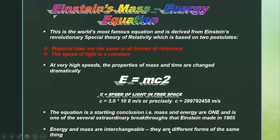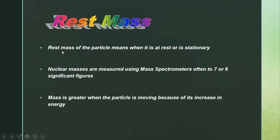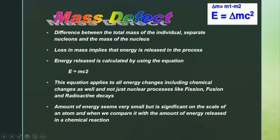Energy and mass are interchangeable — they are different forms of the same thing. Rest mass of a particle means its mass when it is at rest or stationary. Nuclear masses are measured using mass spectrometers, often to seven or eight significant figures. Mass is greater when the particle is moving because of its increase in energy. Mass defect is the difference between the total mass of the individual separate nucleons and the mass of the nucleus.